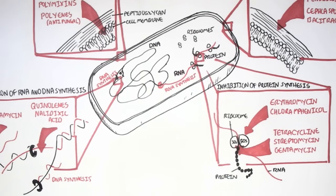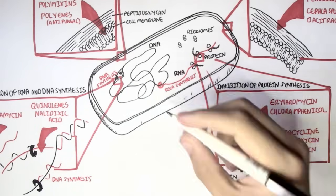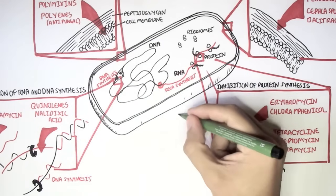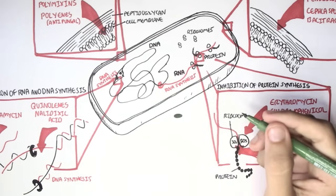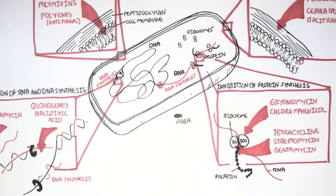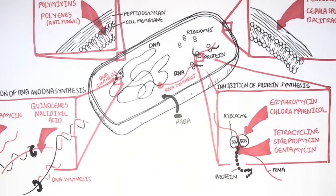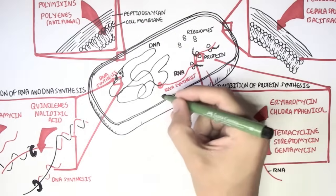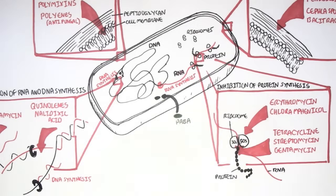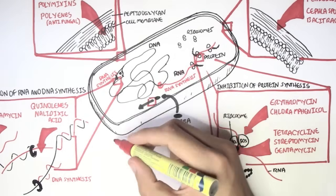The last type of antibiotic are the ones that inhibit folic acid metabolism. Normally, this green thing here called PABA, which stands for paraaminobenzoic acid, is a precursor to folate. The bacteria can metabolize PABA into folate.